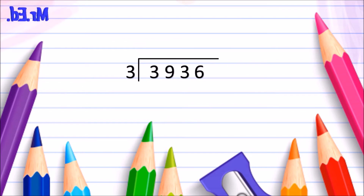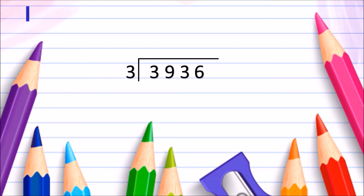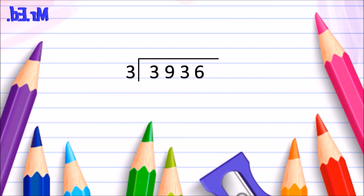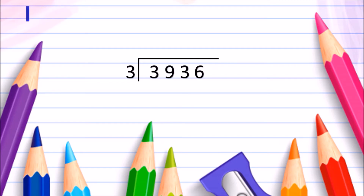So let's look at this number: 3,936 divided by 3. Remember, we're trying to find out how many times our divisor — in this case 3 — goes into our dividend. We look at the first number in our dividend, which is 3.